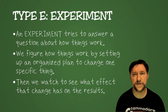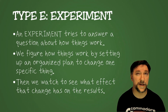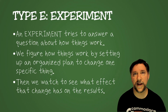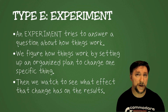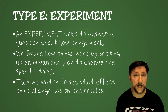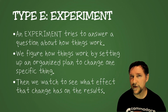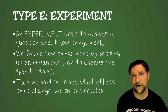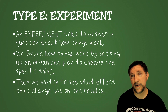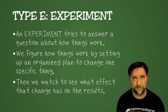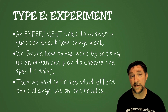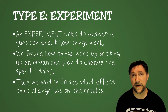The first type is the experiment, which is what people think of classically when they think of a science fair project. You're trying to collect information about what happens under a specific set of circumstances. You set up a really organized plan, change one specific thing, run the experiment, then change it a little more and run it again — looking for a pattern where the change has some impact on the results.